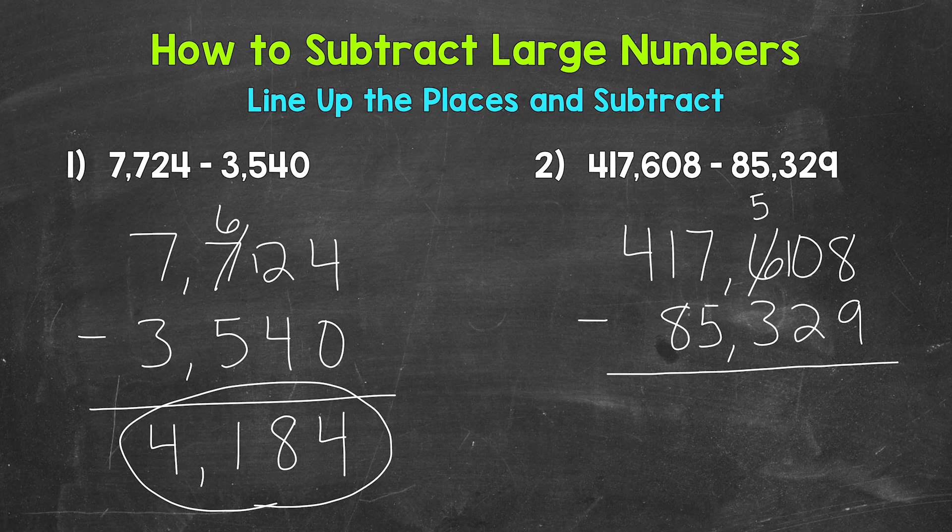We have a 10 here, but we need to borrow from the 10 in order to subtract in the ones place. So that's a nine. And then we end up with 18 minus nine. That gives us nine. Now we can work our way left. Next is the tens place. Nine minus two is seven.